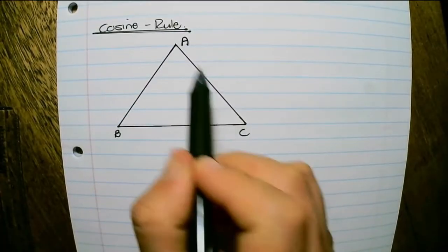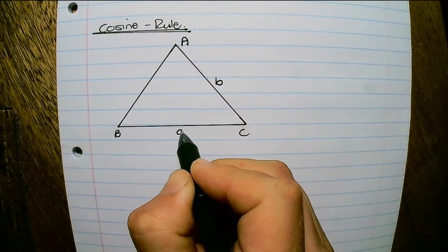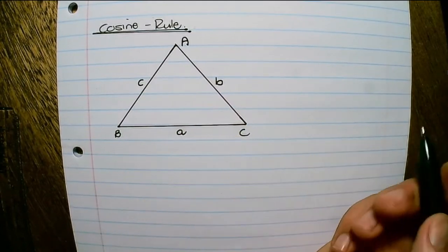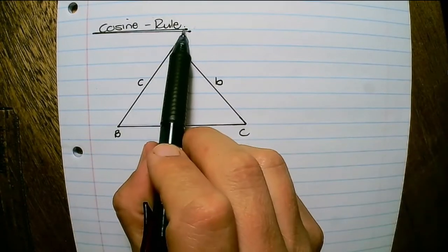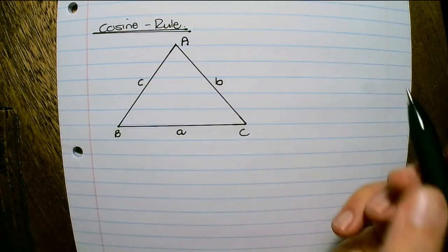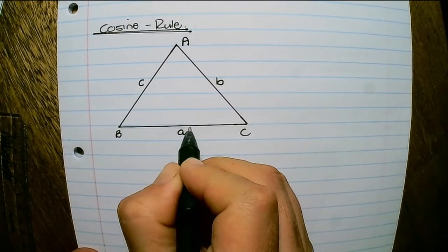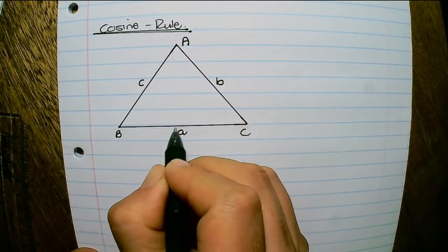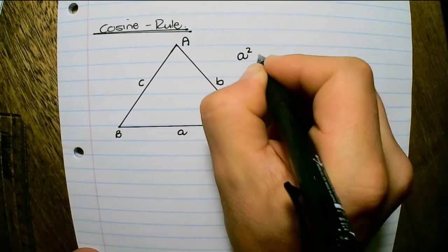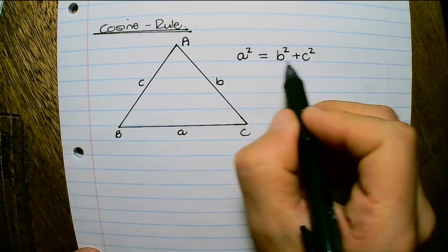Let us consider triangle ABC to discuss the cosine rule. As explained before, sides are named according to the angle on the opposite side. The cosine rule can be used to find the size of an angle or the length of a side. If we want to find the length of side a (BC), then a squared equals b squared plus c squared — which almost looks like Pythagoras.